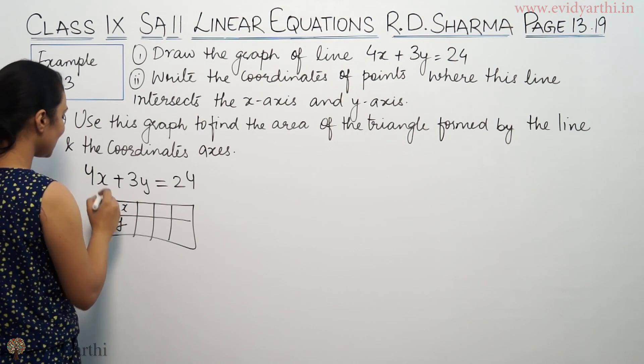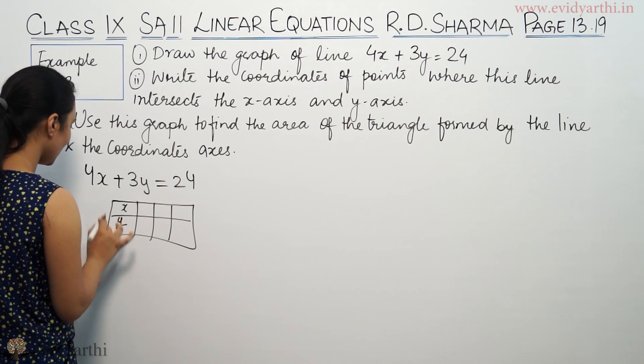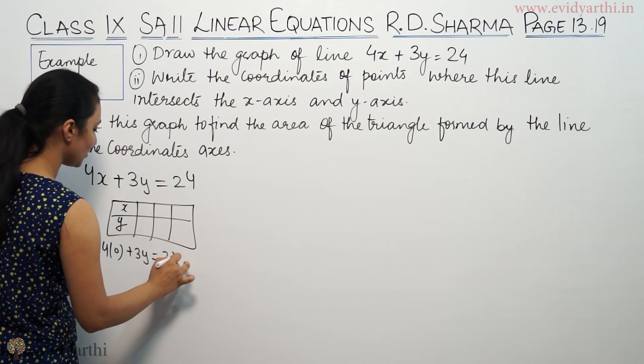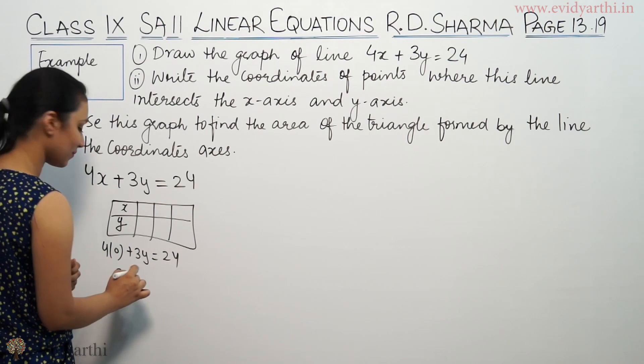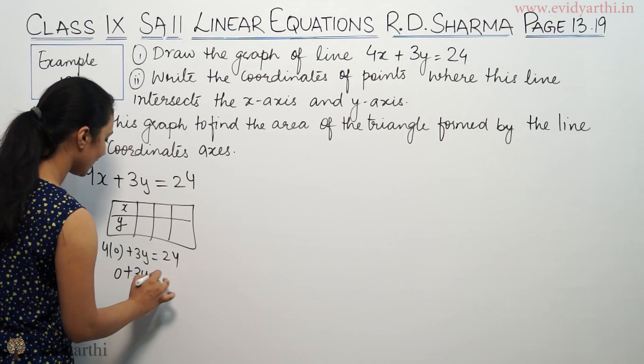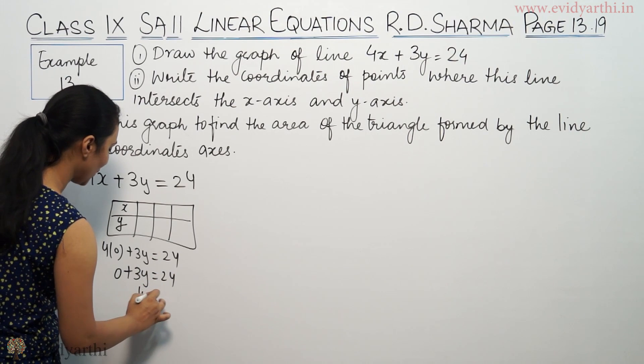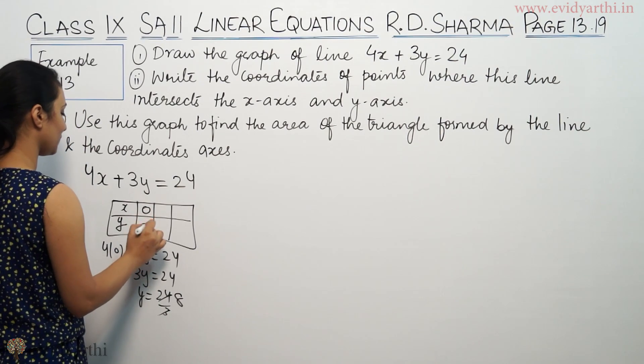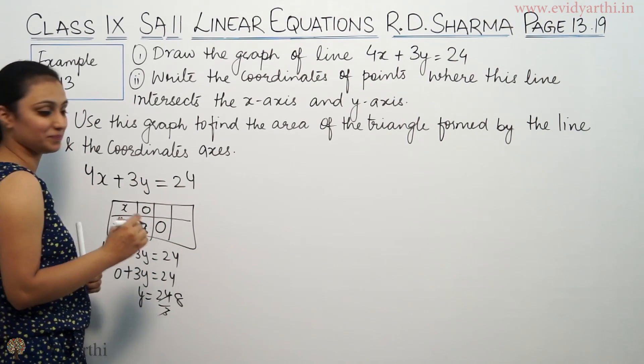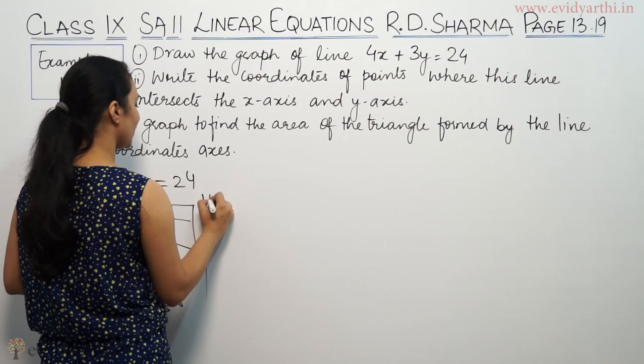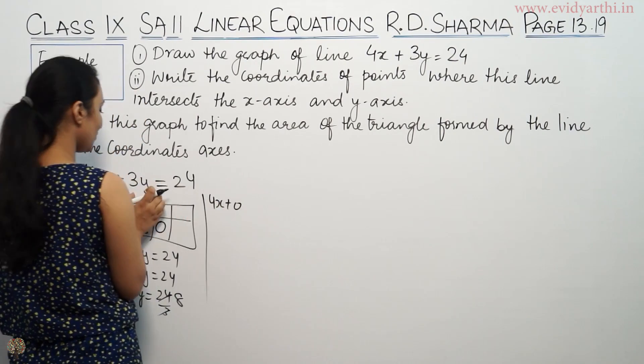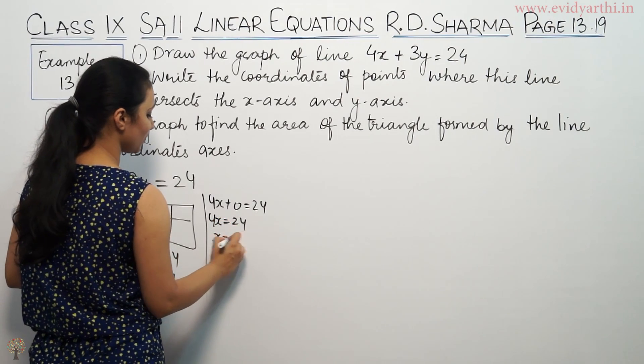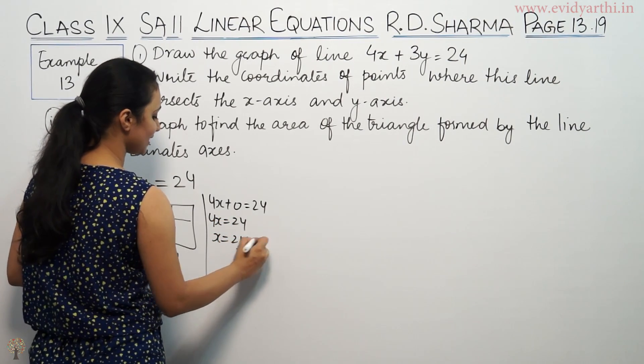First, suppose x is 0. So 4 into 0 plus 3y equals 24. 0 multiplied by something is 0, plus 3y equals 24. So y equals 8. When y is 0, 4x equals 24, so x equals 6.